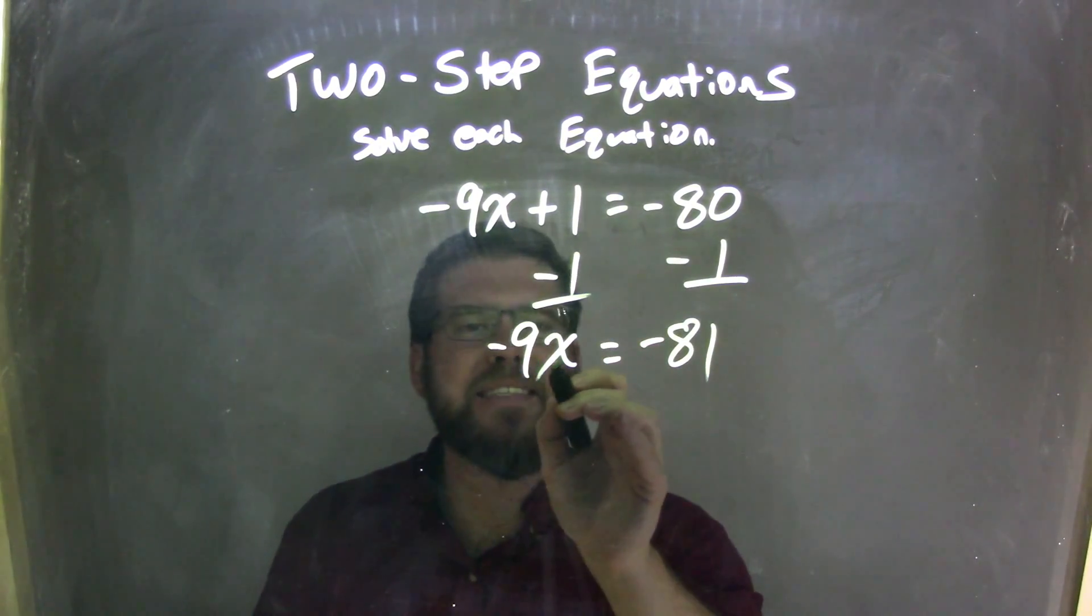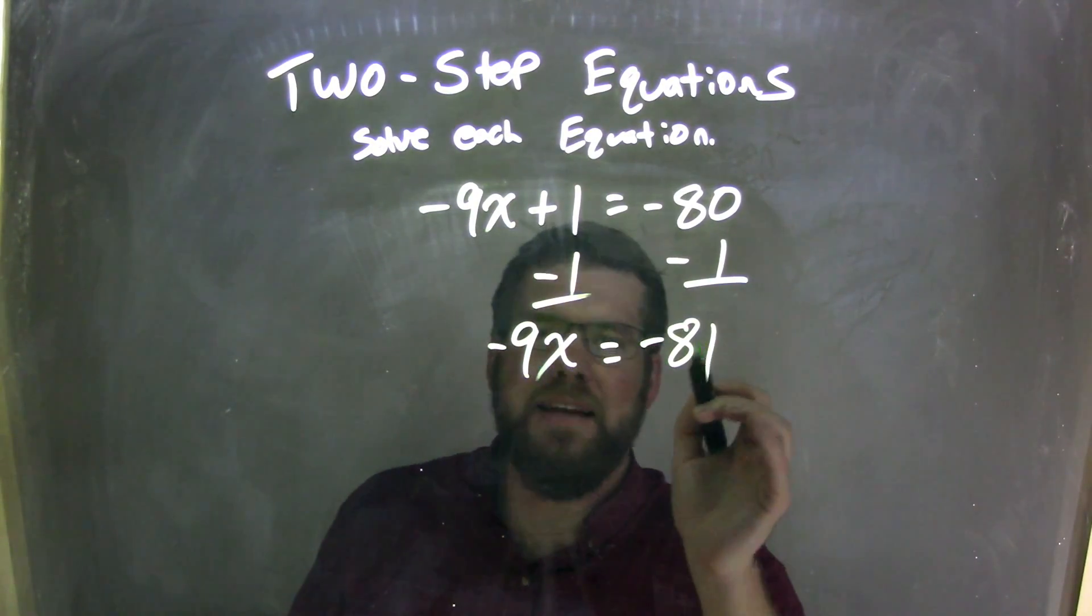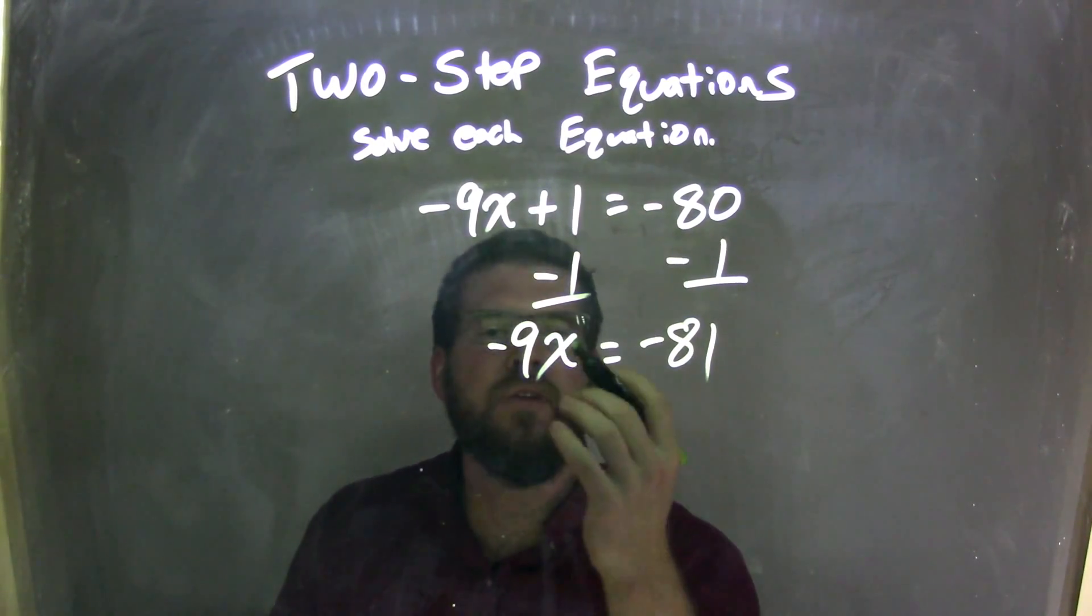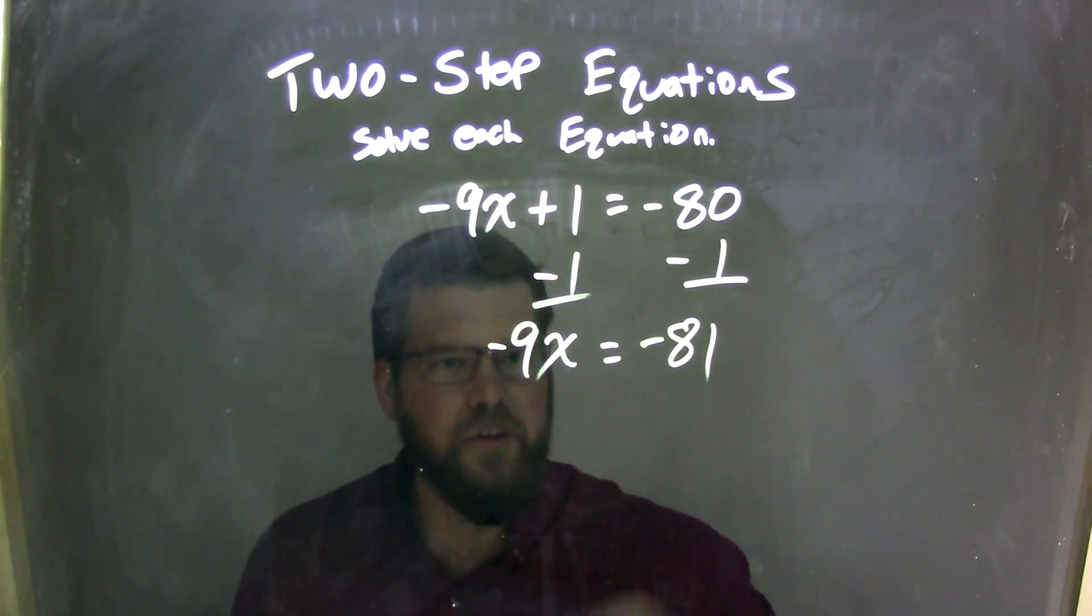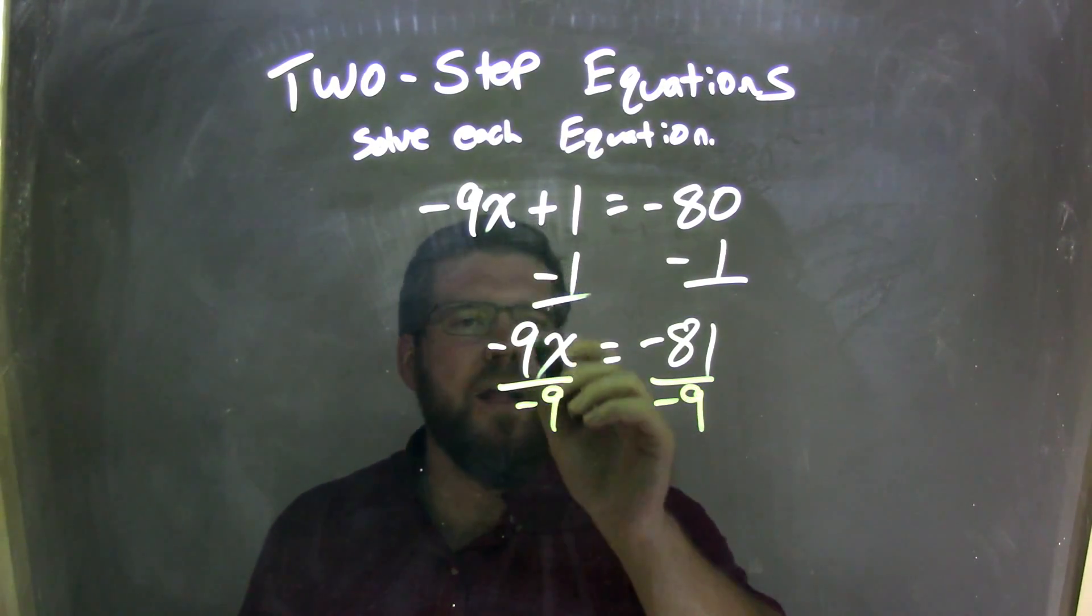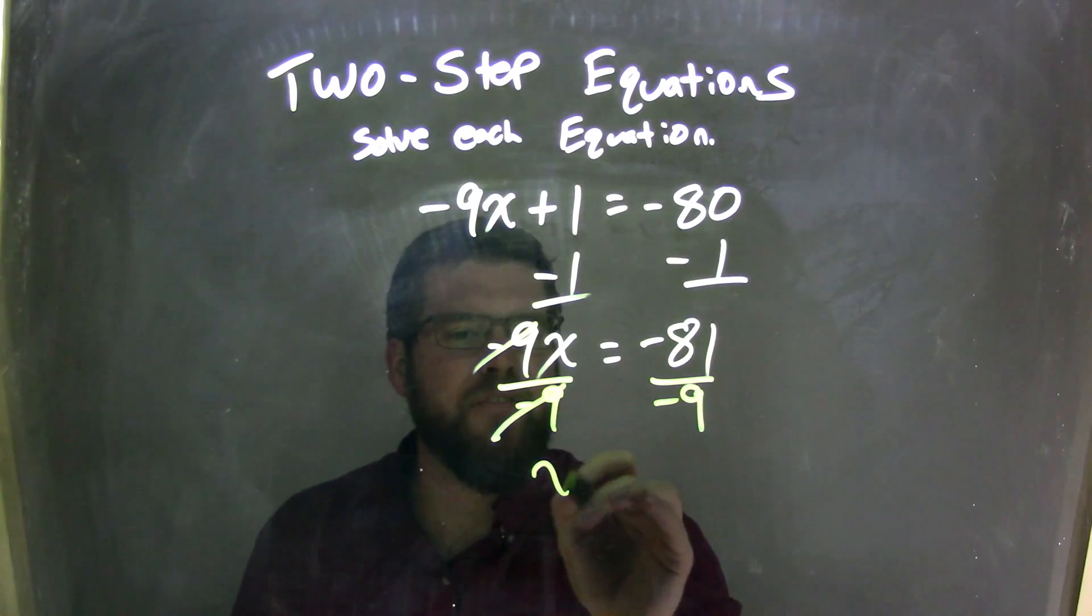So now I have negative 9 times x equals negative 81. Well, multiplication here, opposite of multiplication is, you can guess it, division. So I'm going to divide by negative 9 on both sides. The negative 9s cancel on the left, giving me the x.